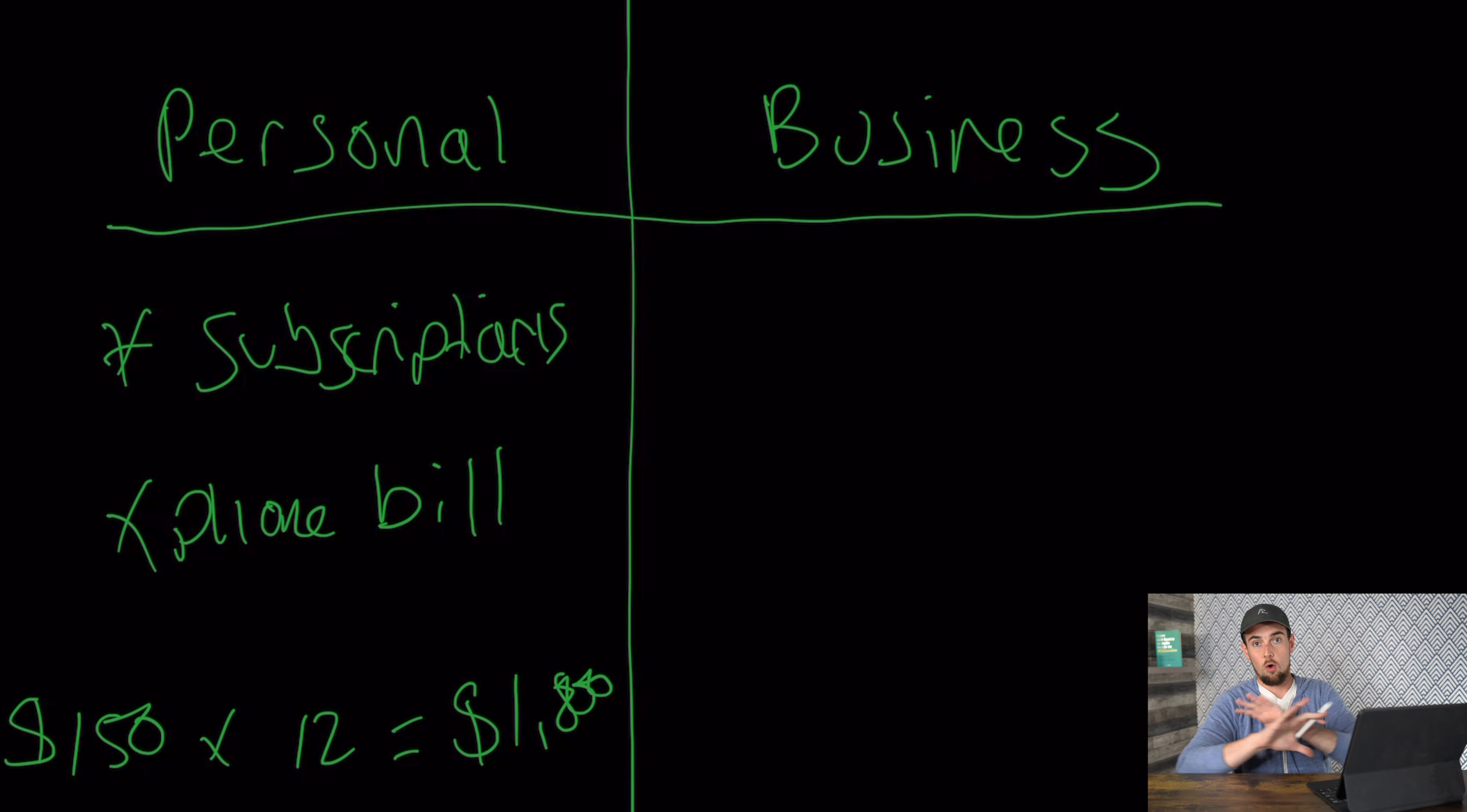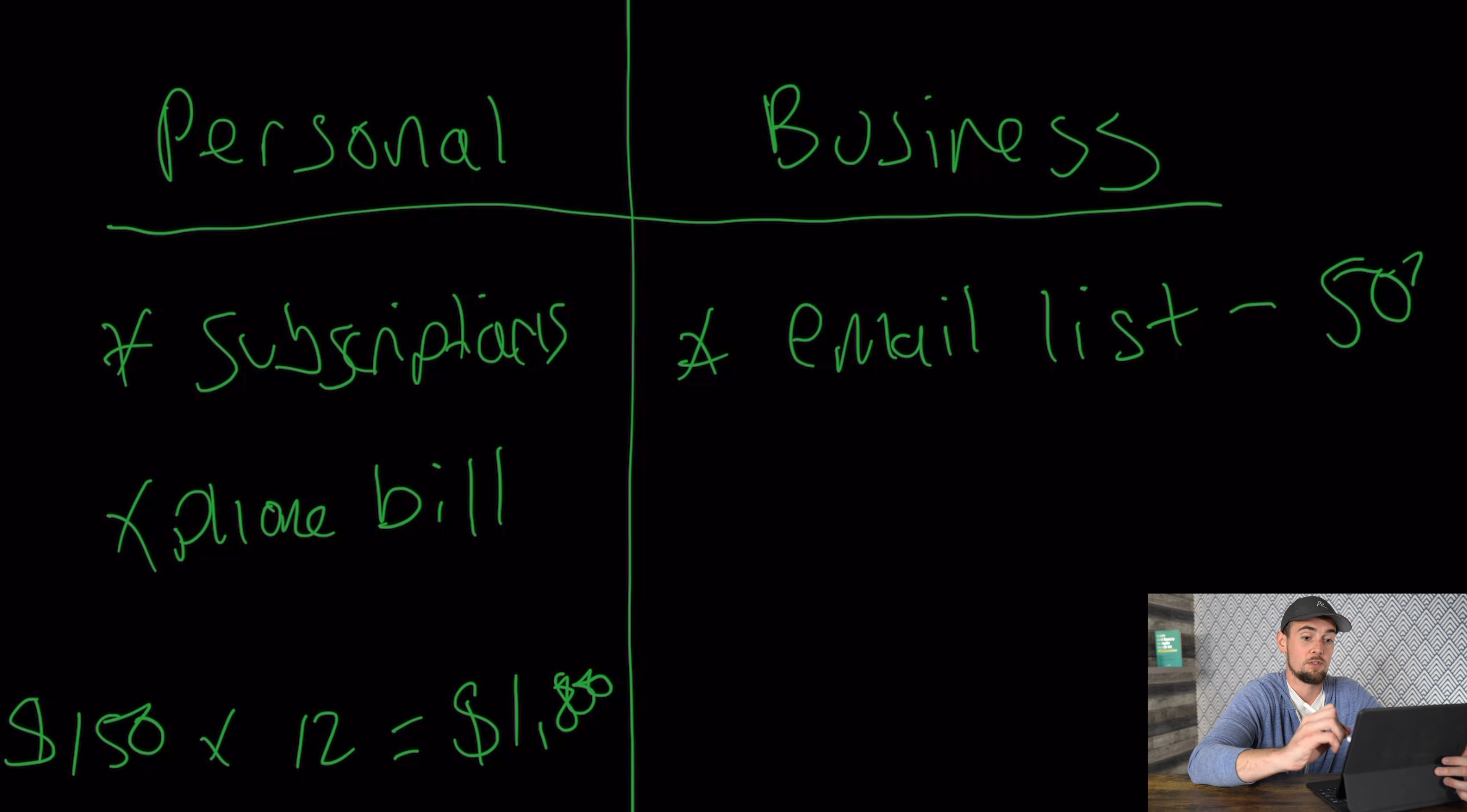Now we did this across all of the subscriptions and pretty much determined what was essential and what wasn't. And then within those subscriptions that I was paying for for my businesses, we figured out how to cut costs as much as possible. So another example for businesses, if you have an email list, you're often paying for the unsubscribed people on your list or inactive people who haven't engaged with your content. So we went through my email lists and purged the inactives as well as the unsubscribed, and this reduced the cost here an excess of 50%. So if you have an email list, I would definitely recommend that.